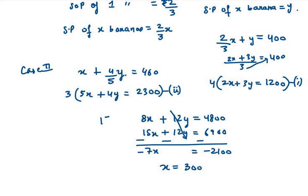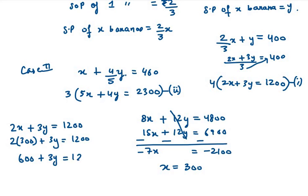Now we need to find the value of y. We can use any equation, either equation number 1 or equation number 2. I will be using equation number 1: 2x plus 3y equals 1200. So 2 times 300 plus 3y equals 1200. 3y equals 1200 minus 600. 3y equals 600. y equals 600 over 3, which is 200. So y equals 200 and x equals 300.